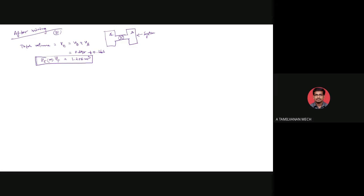Next, we find the total mass. ME equals mA plus mB. mA is 14 kg and mB is 2.5 kg, so total mass MT equals 16.5 kilogram.